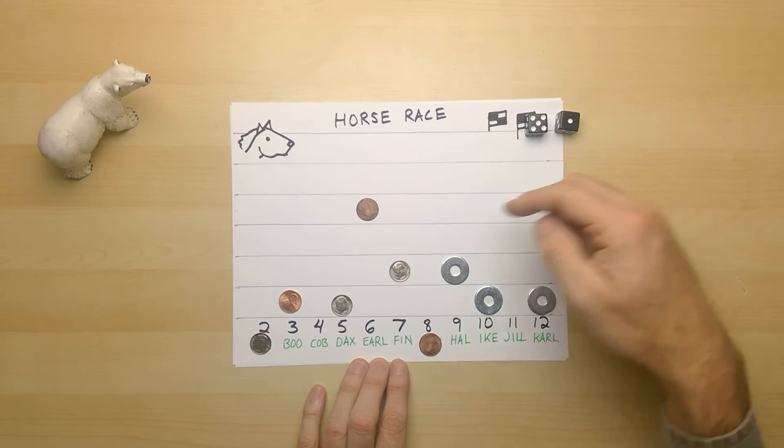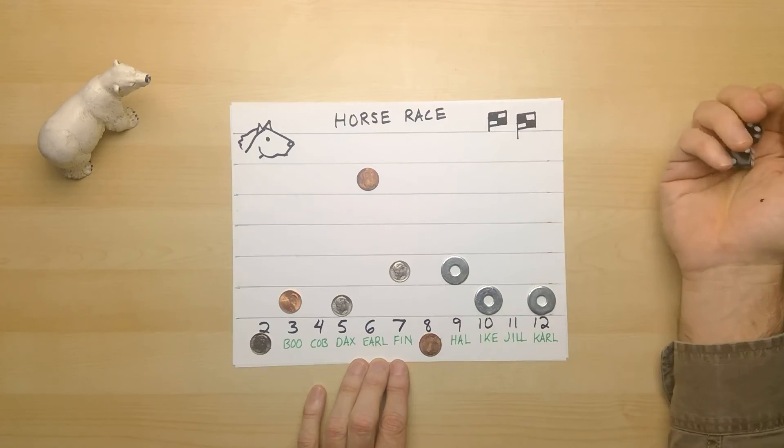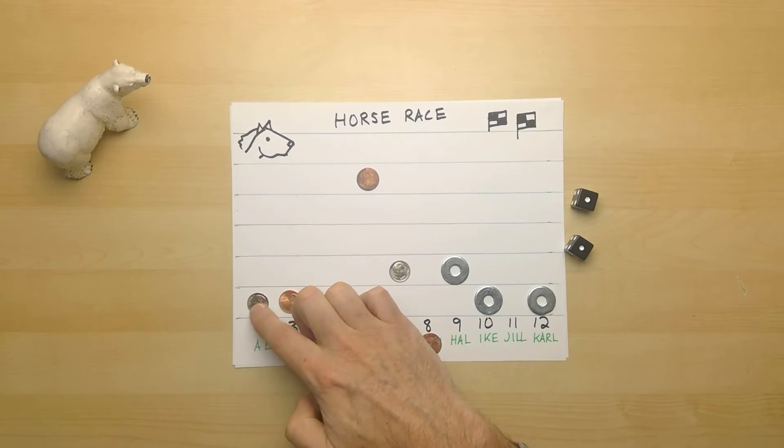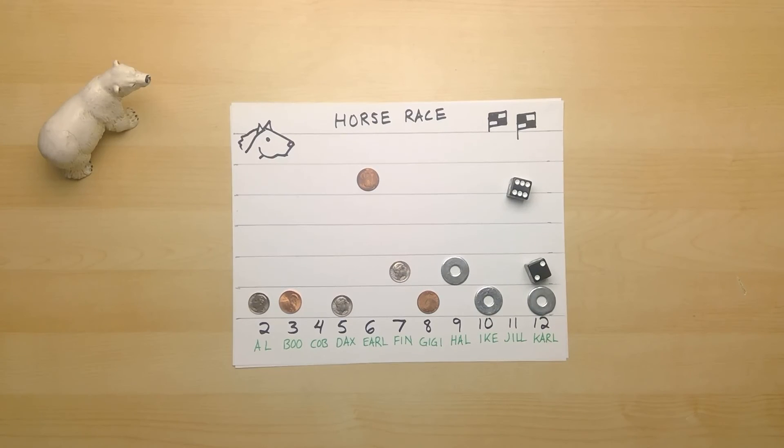Five. Dax is finally out of the blocks. Six. And Earl takes one more great move forward. Two. Out of the gates is Al. So we only have one horse that has not made it out yet. And this time it's eight. And finally Gigi's out.